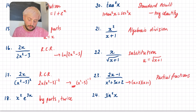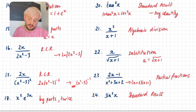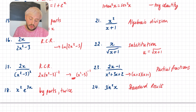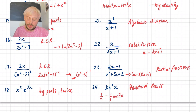Question 24: sin²x. This is one where I would try and memorise the identity used, because this is a standard result. If you've watched my video about everything you need to memorise, you should use the rearranged double angle formula. sin²x you should memorise as ½ − ½cos(2x), and that is a standard result you can integrate.